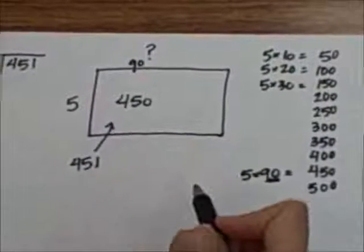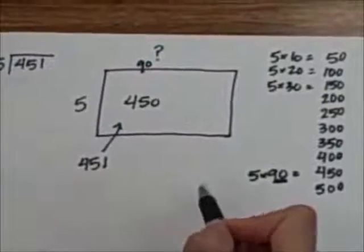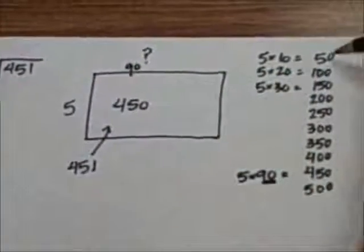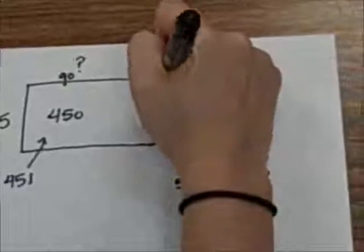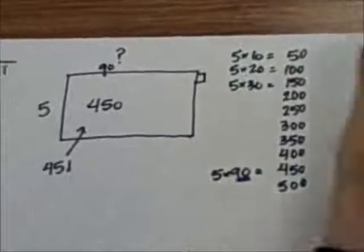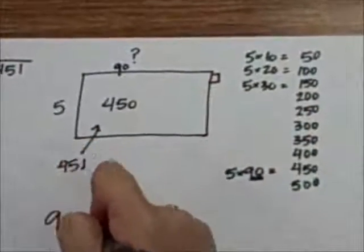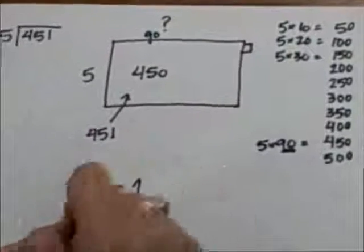However, I still have one more to get to 451, but I can't do that with just going by 5, so I will have a remainder of 1. So my answer is 90 remainder 1.